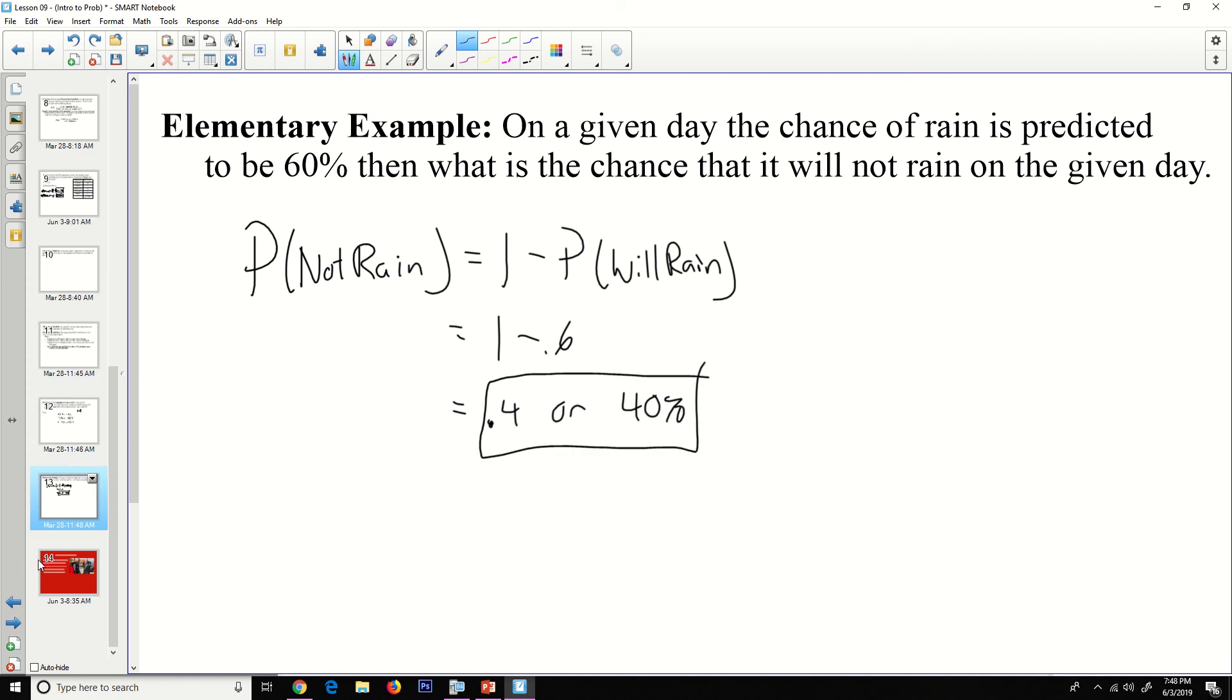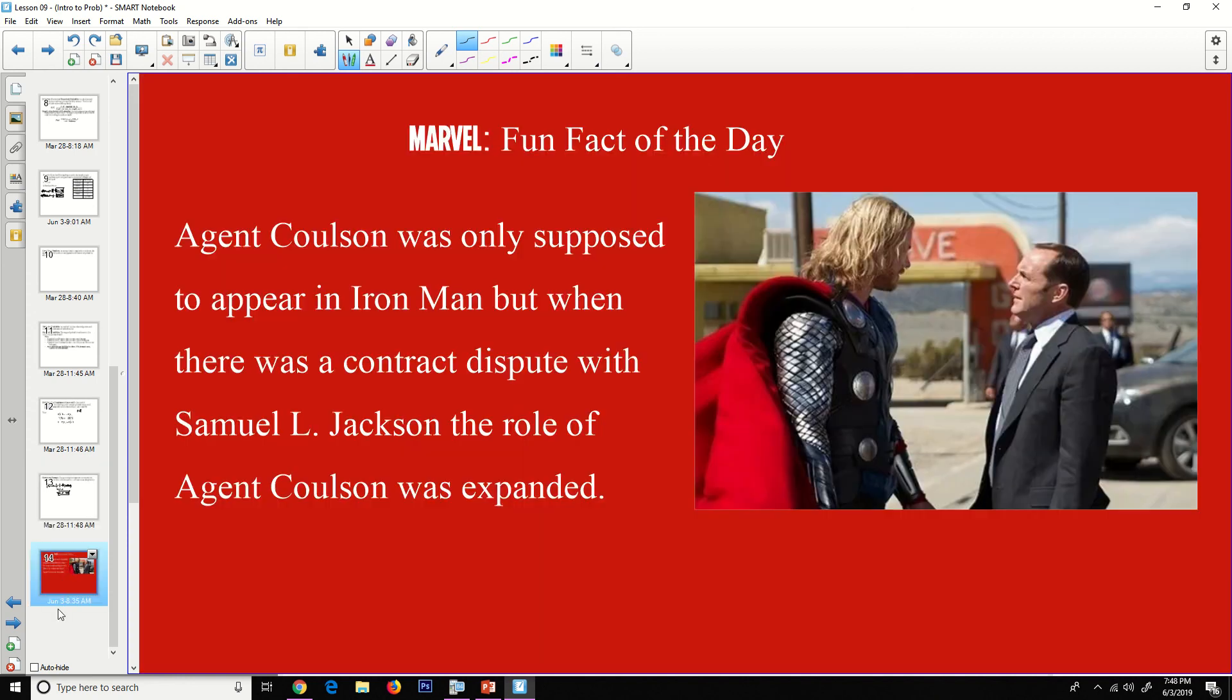Well, that was a lot of stuff and went pretty quick, but we are to the end. So today's Marvel fun fact of the day: Agent Coulson was only supposed to appear in Iron Man, but when there was a contract dispute with Samuel L. Jackson, the role of Agent Coulson was expanded. And as we know, he was also in Agents of S.H.I.E.L.D., the ABC TV story. Well, that's all I got. I'll see you later. Goodbye.